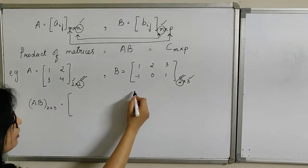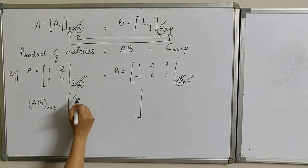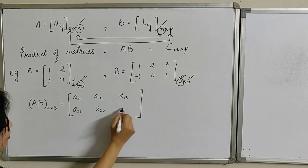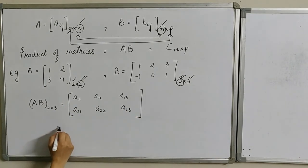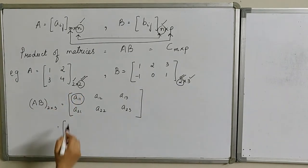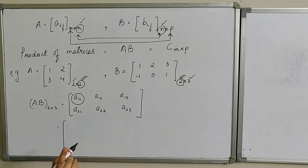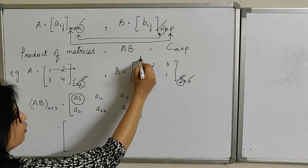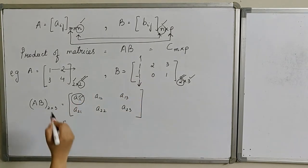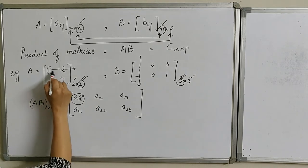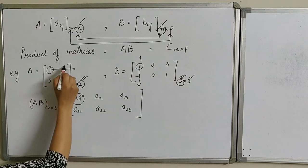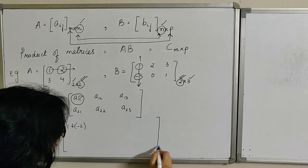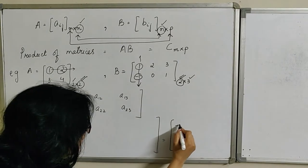The product matrix has 6 elements in all — the first row has 3 elements and the second row has 3 elements. To find the element in the first row and first column, we multiply the first row of matrix A with the first column of matrix B. Multiplying corresponding elements: 1×1 plus 2×(−1), giving the element at this position equal to −1.